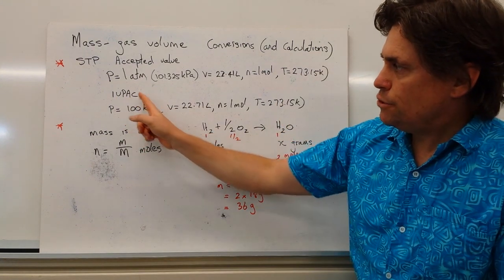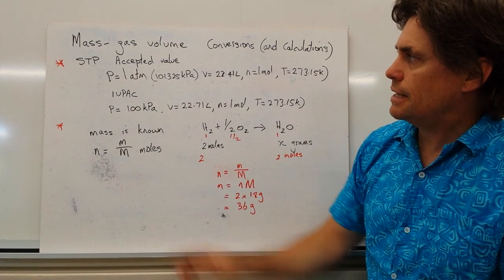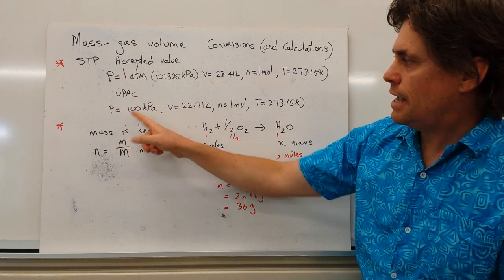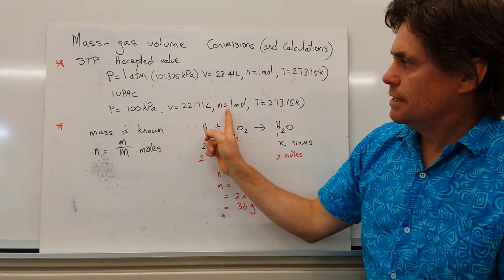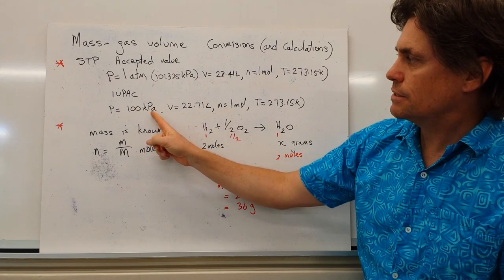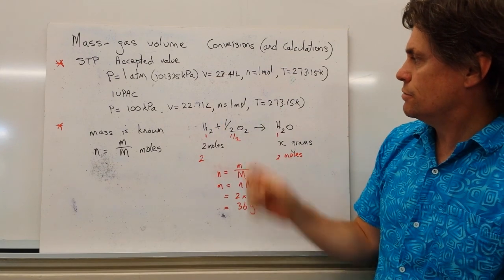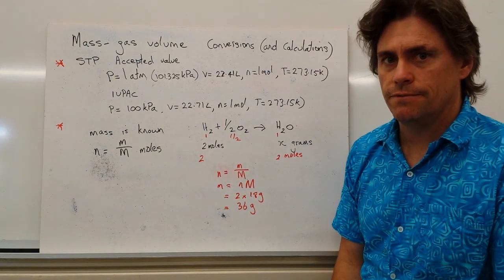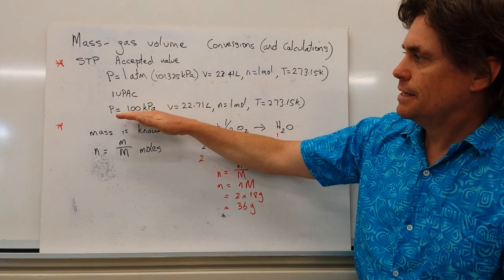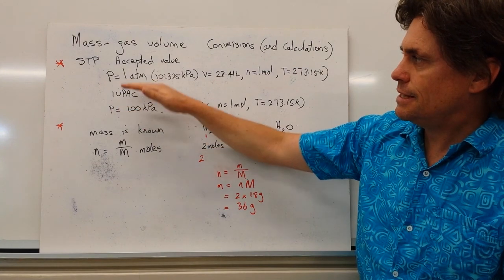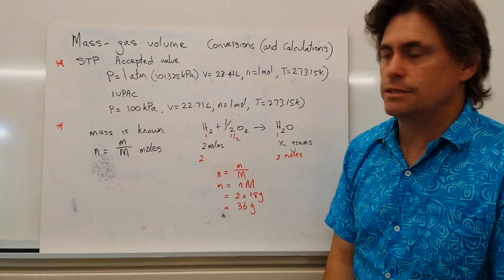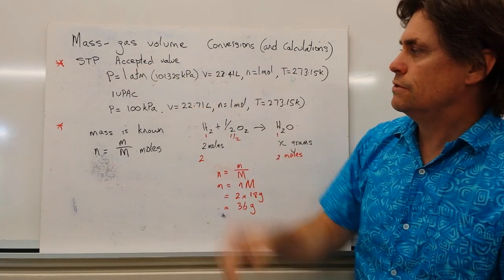The proper IUPAC definition says that STP is defined as one mole of gas that exists at 100 kilopascals and it gives a volume of 22.71 litres if the temperature is at 273.15. So the IUPAC definition says this. The accepted value in many systems across the world gives us those values.